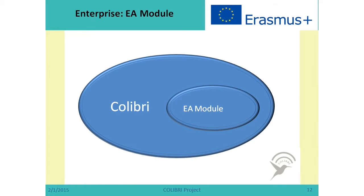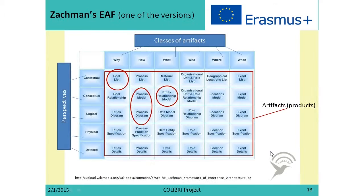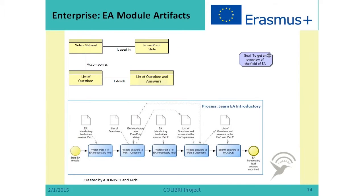To understand it better, we will now consider a small enterprise — the Enterprise Architecture module for the Colibri — and in particular the introductory part of Enterprise Architecture. Let us discuss just a few artifacts: we will see goals, we will see processes, and we will see entity relationships, which represent data used in the enterprise.